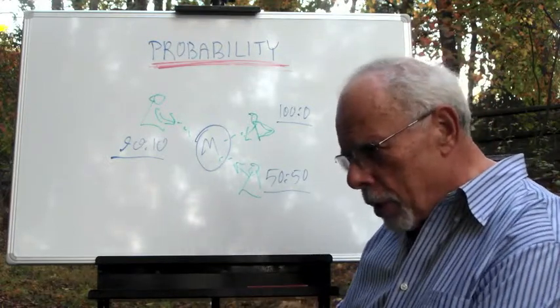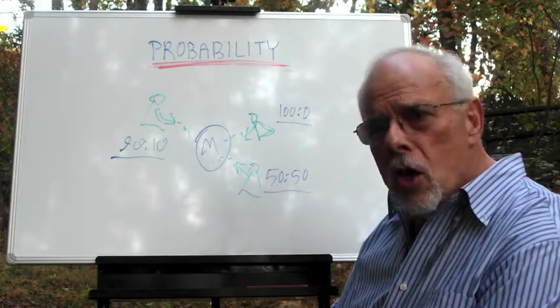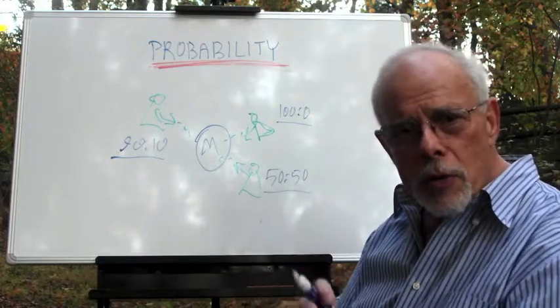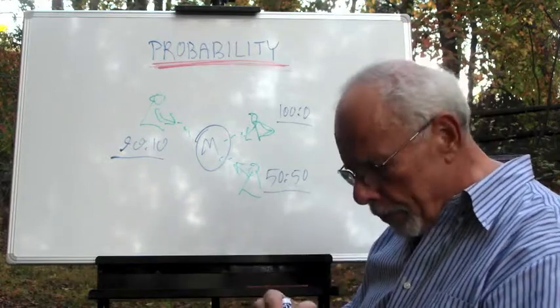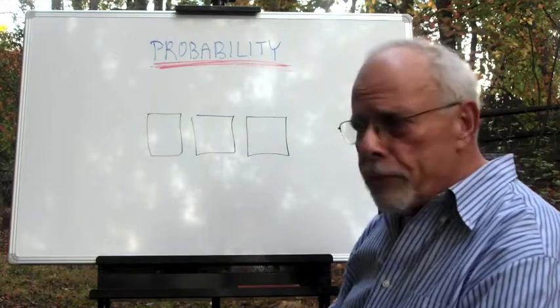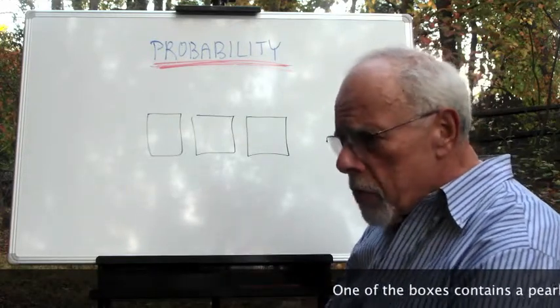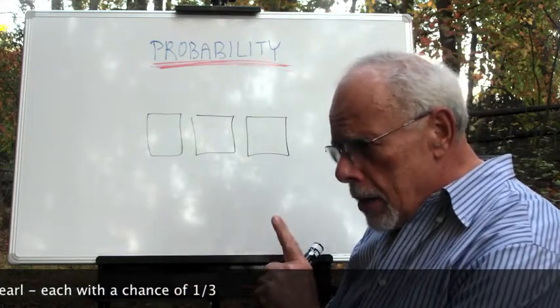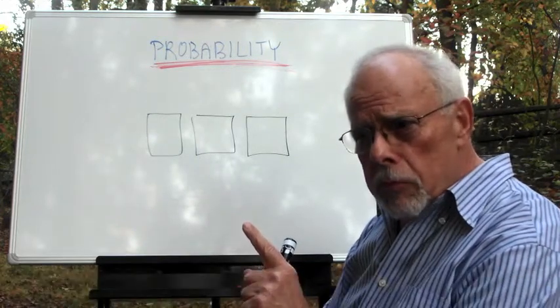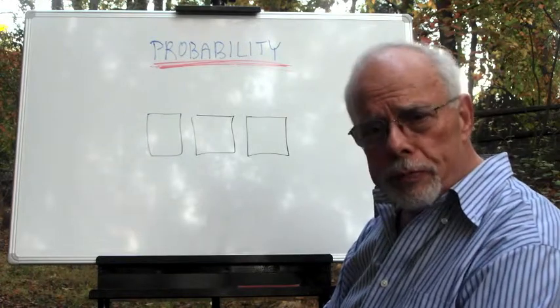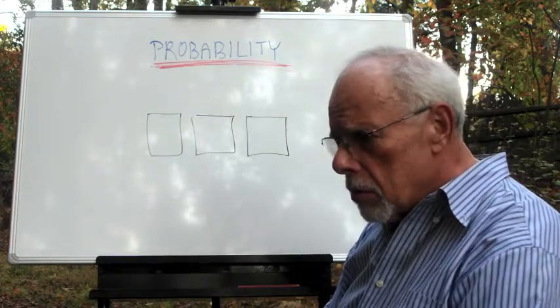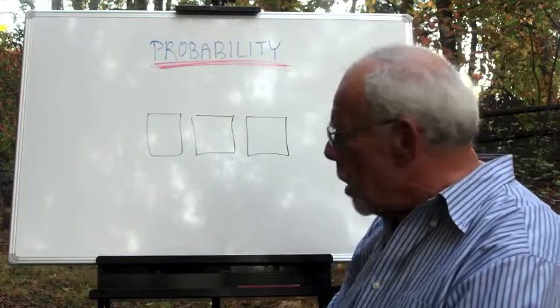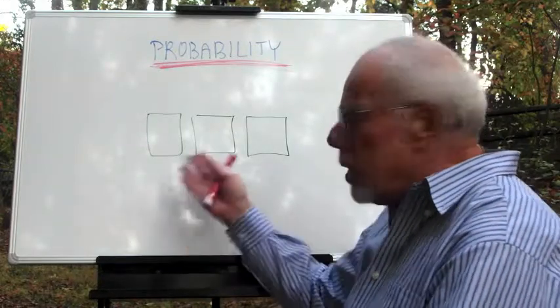And the third element of probability of interest is probability changes in response to new information. Let us work out the case. There are three boxes here. I tell you, one of them has a pearl inside. If you discover which of those boxes has the pearl, you get it. Now, it costs you, let's say, ten dollars to play. But the pearl may be worth a thousand dollars. So what do you do? You have no idea. It's one of those three.